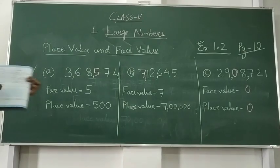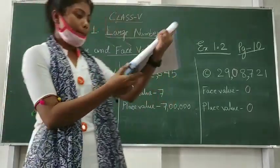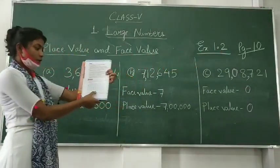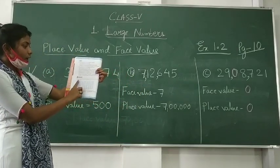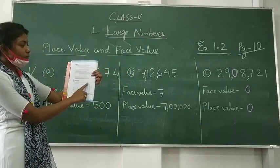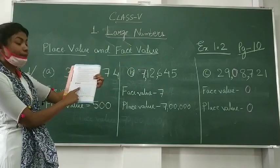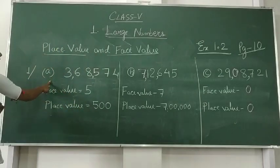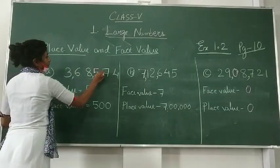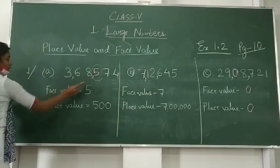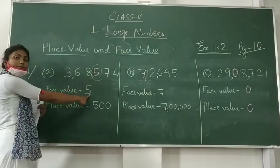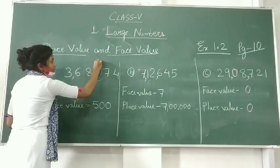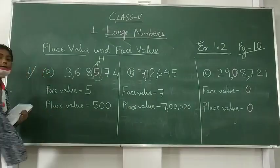Now let us see the exercise. You can see in your book — question number one, page number ten, exercise 1.2. Number A: what is the face value of five? It will be five — same number. And its place value will be five hundred, as it is in hundreds place.